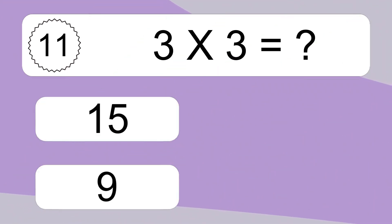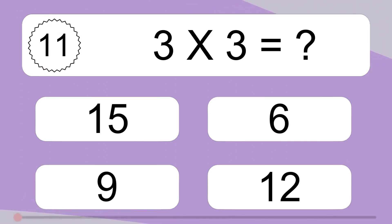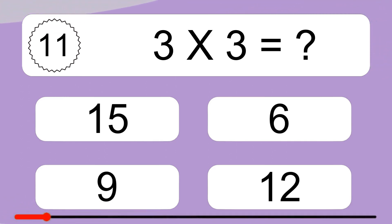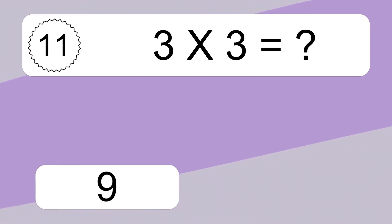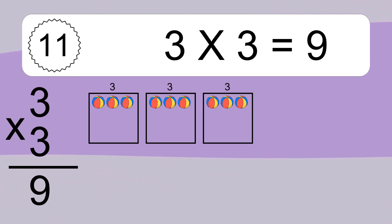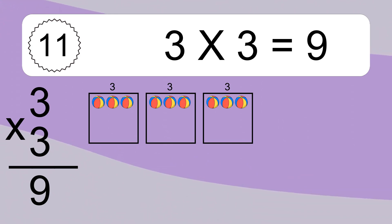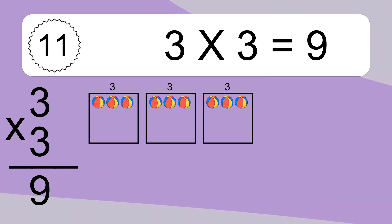3 times 3 equals what? 9. We have 3 boxes, and each box has 3 colorful balls inside. If you count all the balls in all the boxes together, you will have 3 times 3 balls. This equals 9 balls.